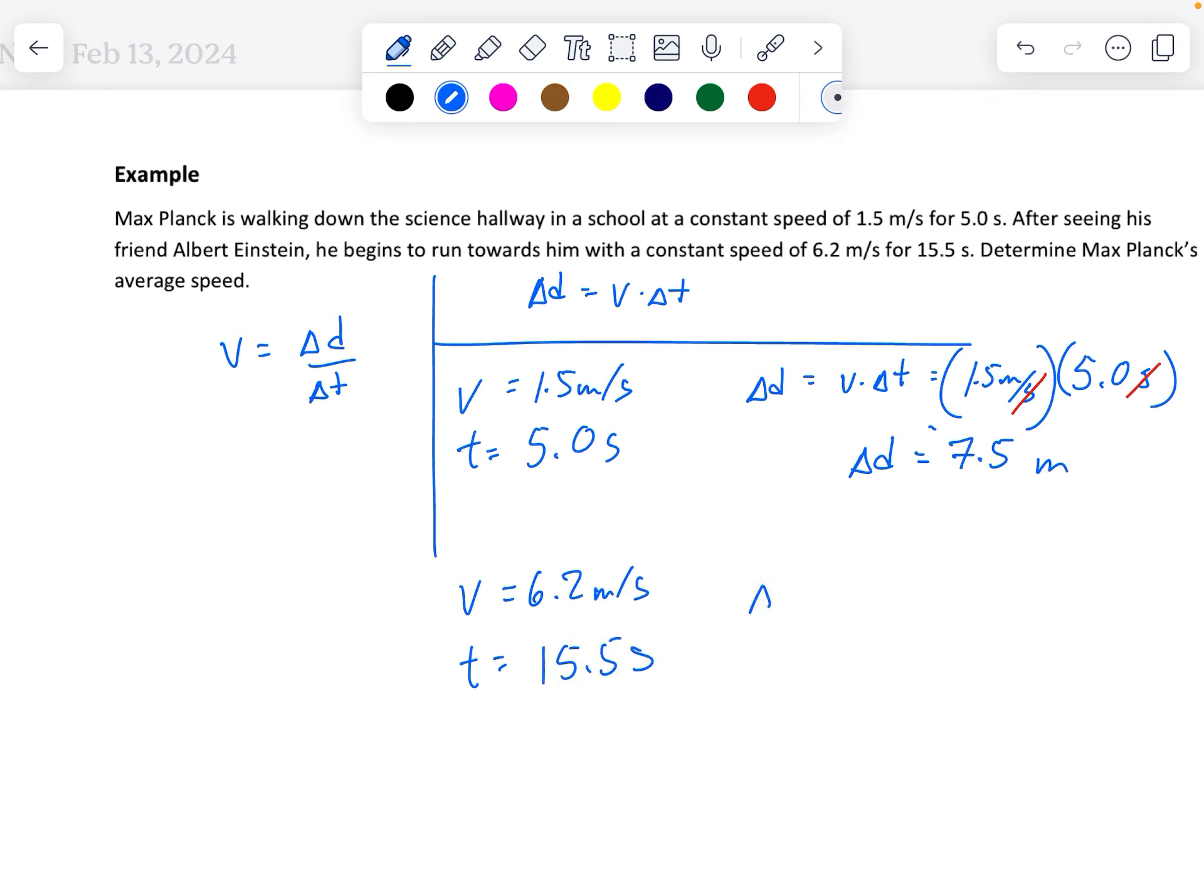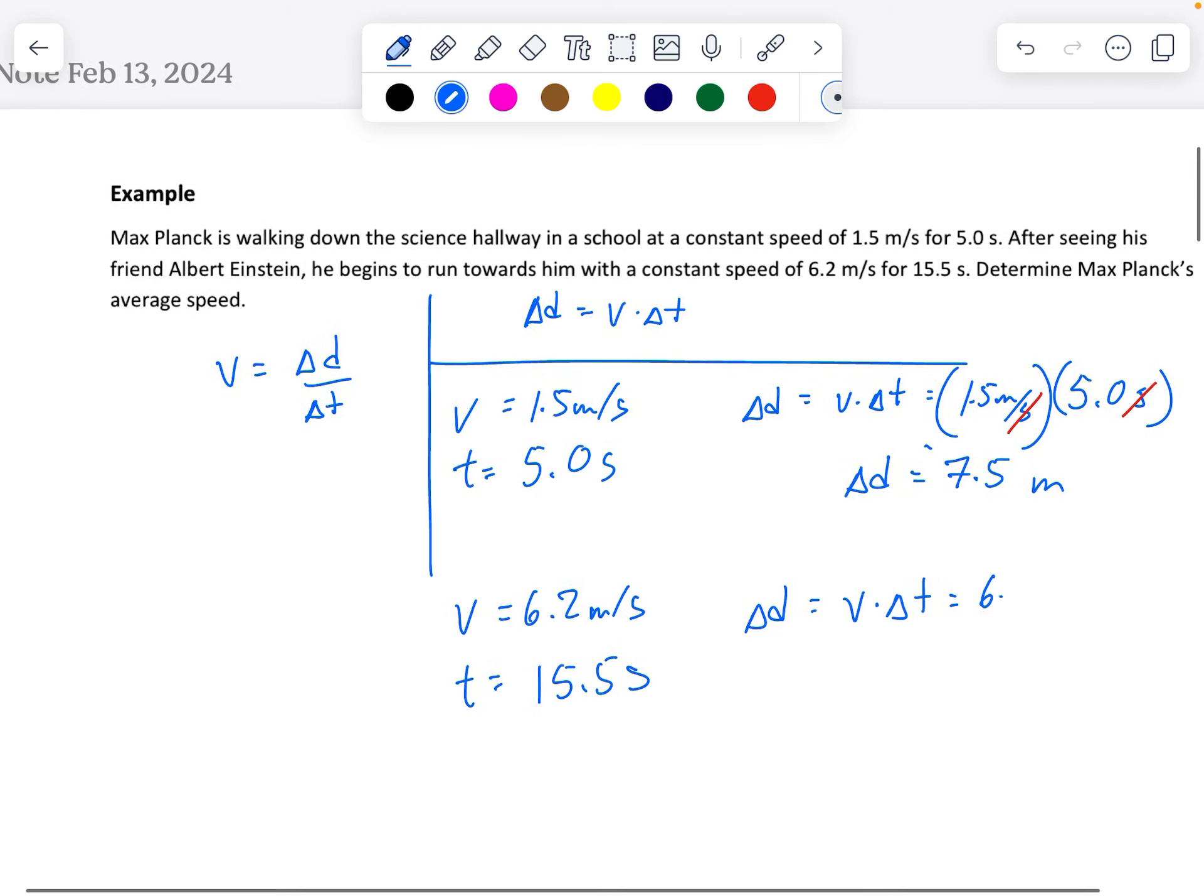And so now the change in distance for Planck in this time is still going to be speed times change in time. But now he's going 6.2 meters per second for a total of 15.5 seconds. And so the change in distance is going to be 6.2 times 15.5 and we get 96.1 meters traveled. So meters per second times second leaves us with meters.